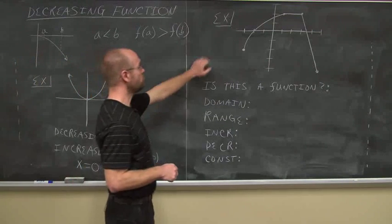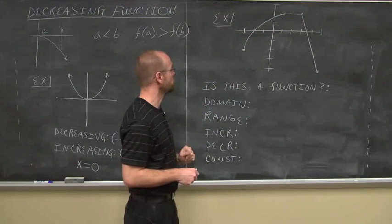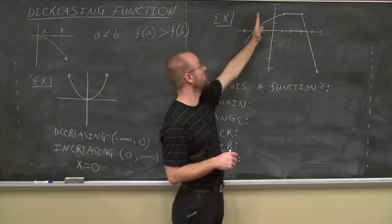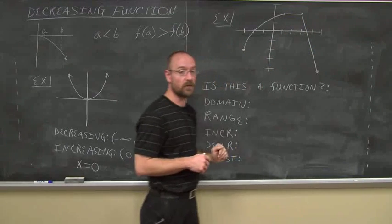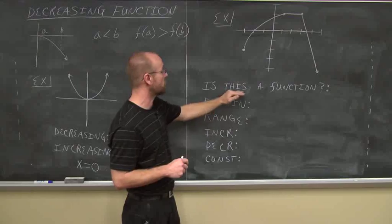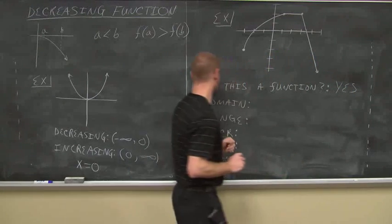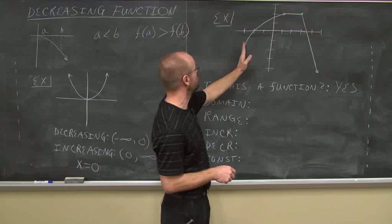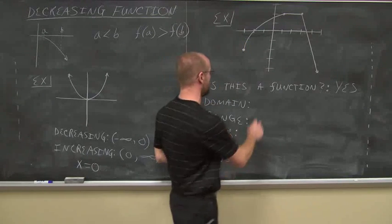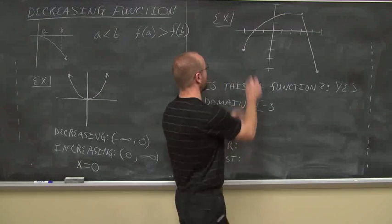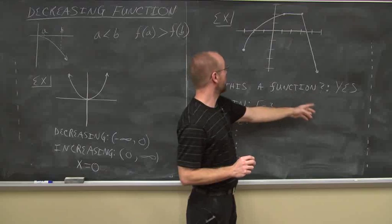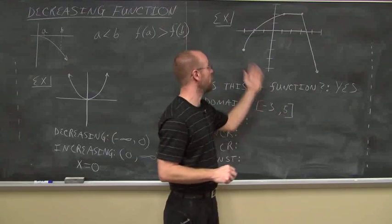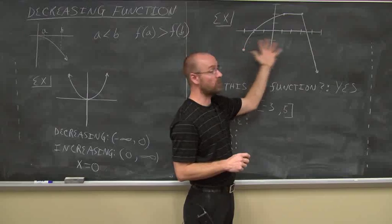Here I have a piecewise function. First, is this a function? We test it using the vertical line test — it only intersects once no matter where we place a vertical line, so yes, it's a function. The domain: the lowest x value is negative 3, with a solid dot, so it includes that value. It goes to positive 5, also a solid dot, so the domain is negative 3 to positive 5. These are the x values where we find some piece of the graph.